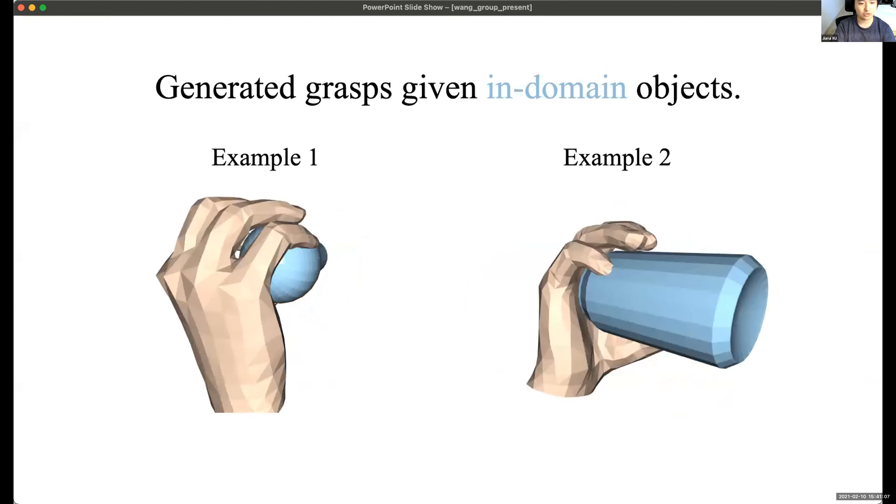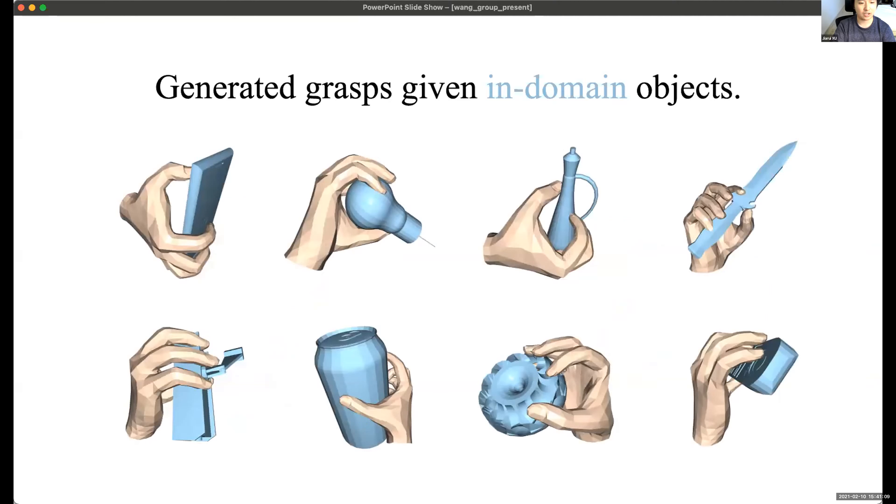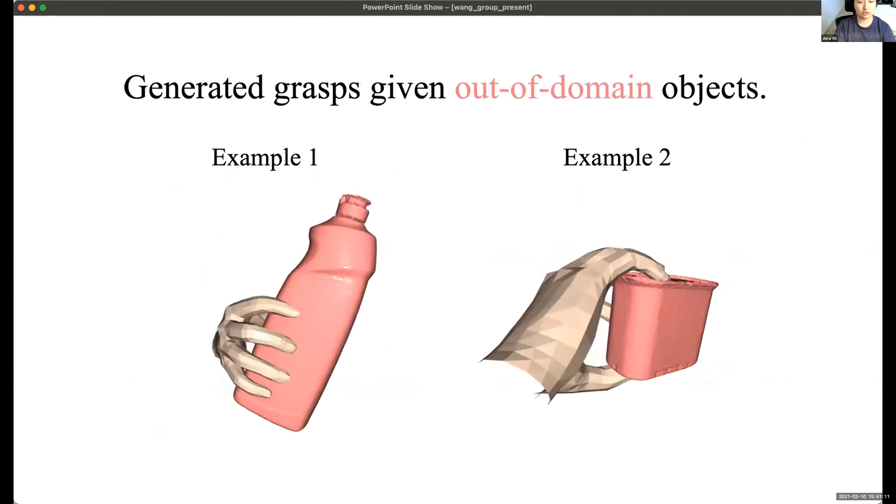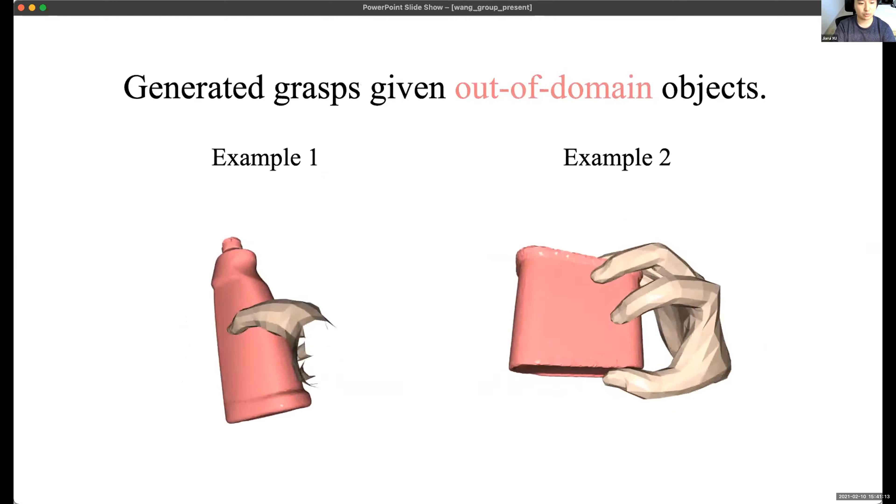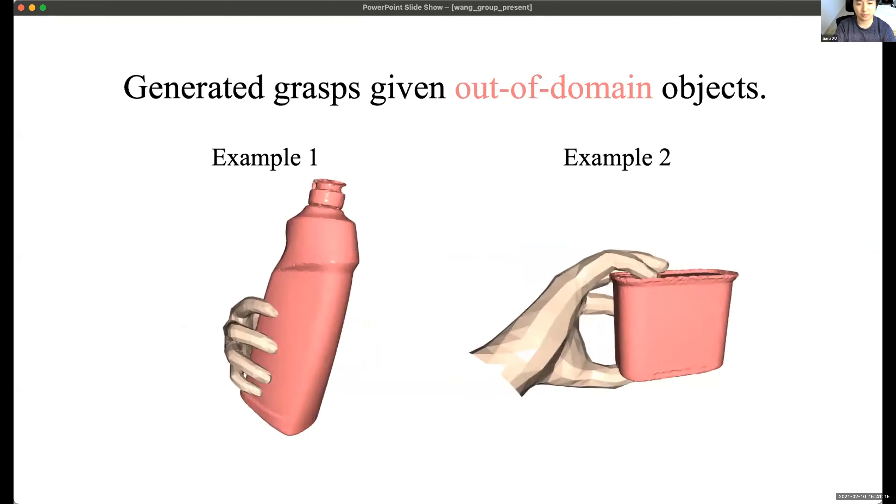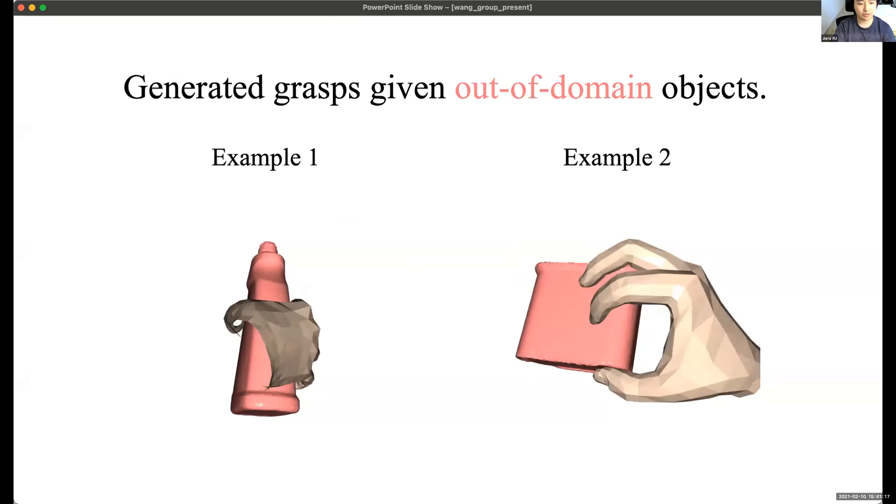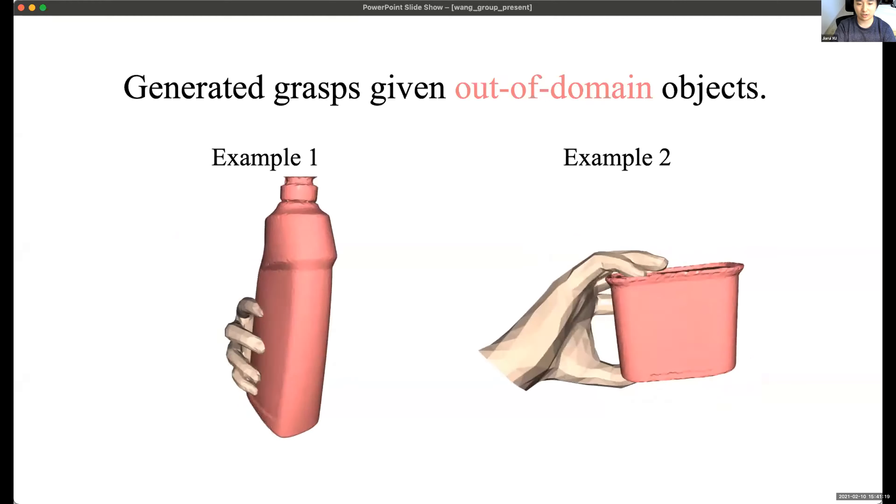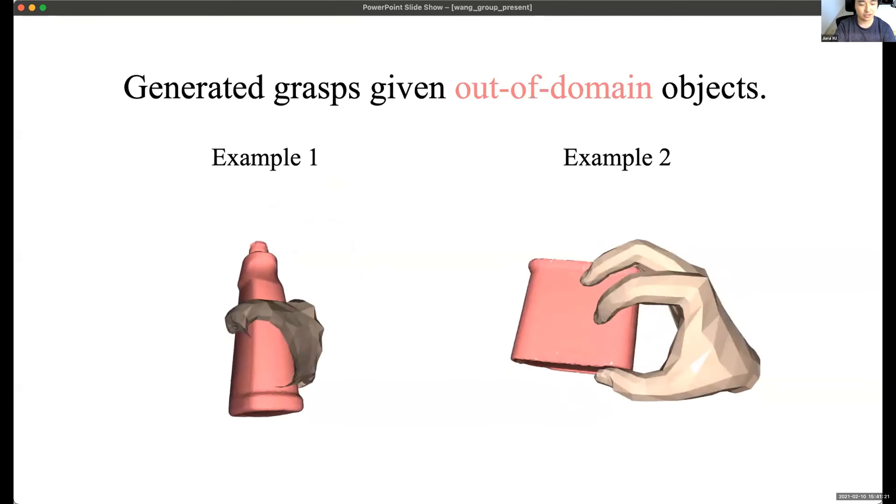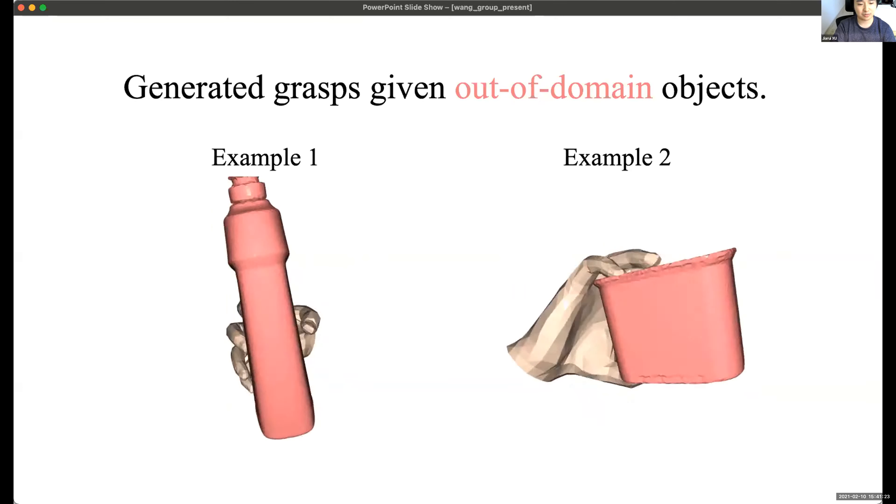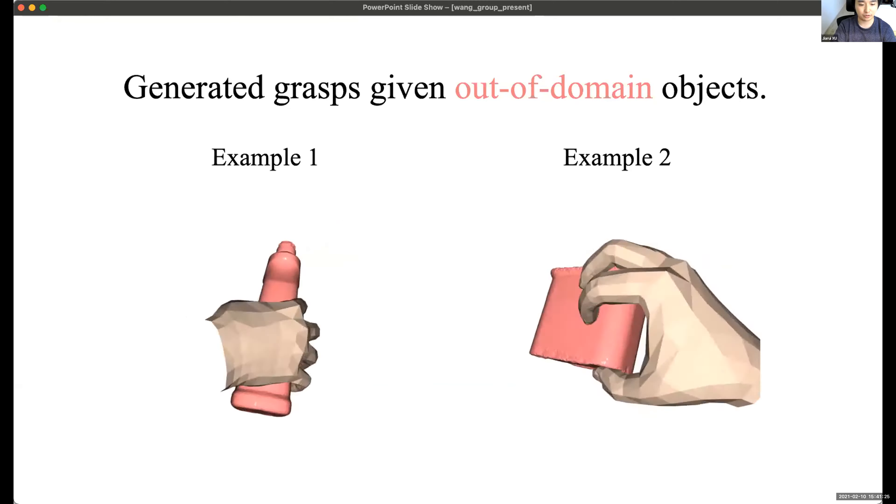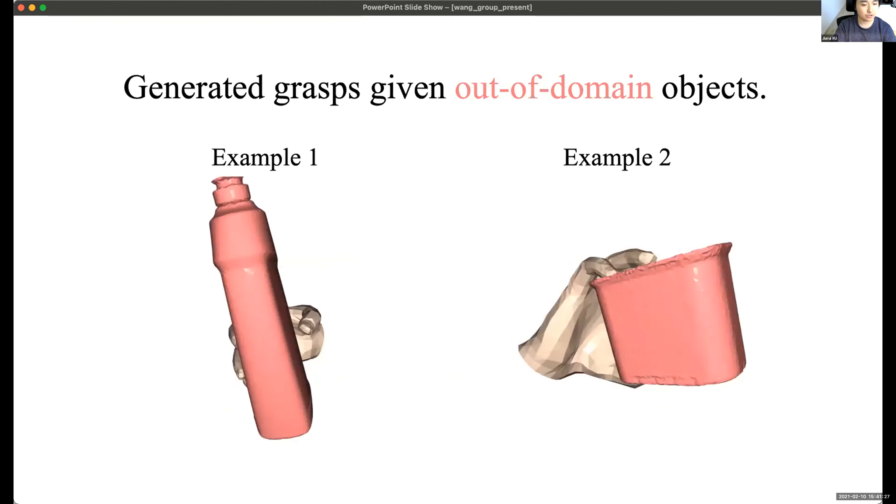And our method could also generalize to more in-domain objects. And we could also generalize to out-of-domain objects. These two objects have never been present in the dataset. However, we can generate a reasonable grasp to grab the object. And this kind of grasping generation is very useful for the robotic simulation and Yuzi may introduce later.